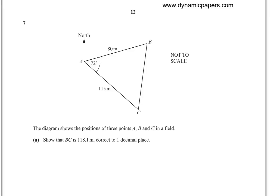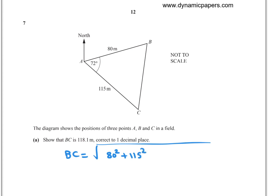Number 7: The diagram shows the positions of three points A, B, and C in a field. Show that BC is 118.1 metres correct to one decimal place. Using the cosine rule with two sides and the included angle: BC equals square root of (80 squared plus 115 squared minus 2 times 80 times 115 times cosine 72) equals 118.1 metres.